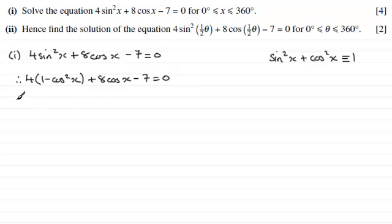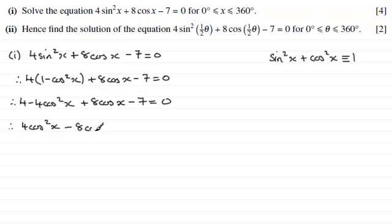Now if we expand the bracket, we now have 4 minus 4 cos squared x, plus 8 cos x, minus 7 equals 0. And what I've got is a quadratic equation here. Only this term is negative. So what I'm going to do is multiply both sides by minus 1. If I multiply minus 4 cos squared x by minus 1, I get 4 cos squared x. And then for 8 cos x, multiply that by minus 1, you get minus 8 cos x. And at the moment, we've got 4 minus 7, which is minus 3. But if I multiply that by minus 1, I end up with plus 3, and that equals 0.